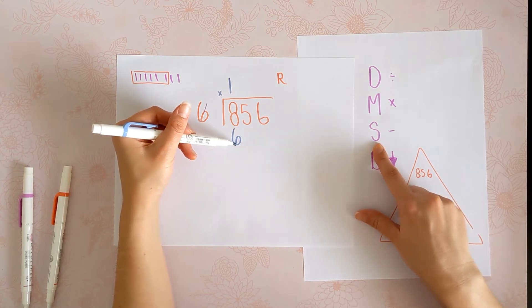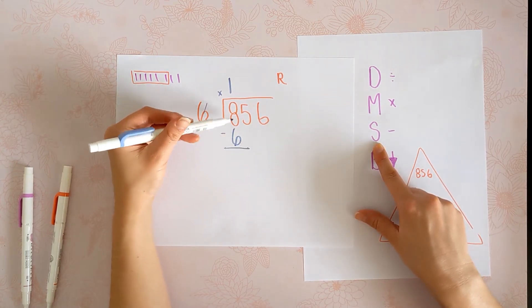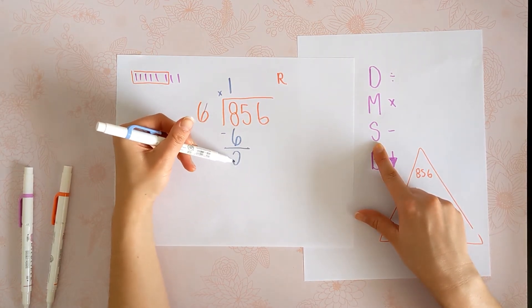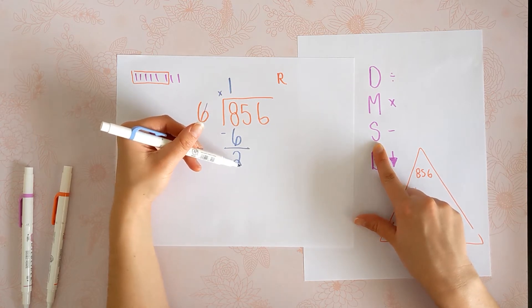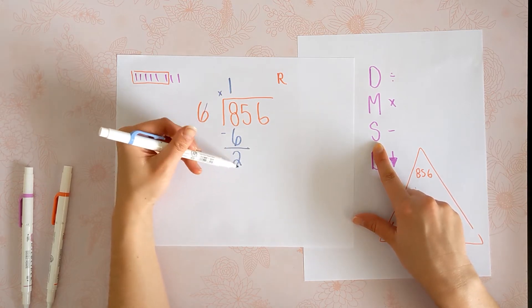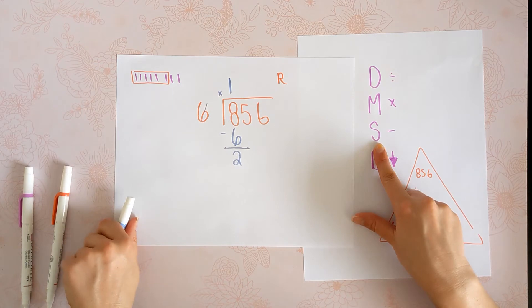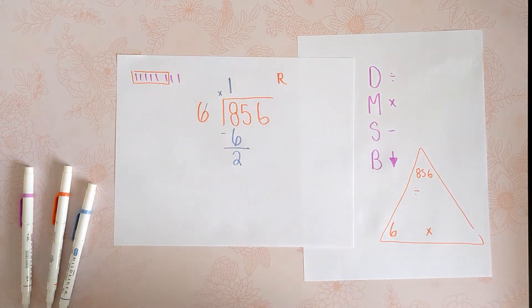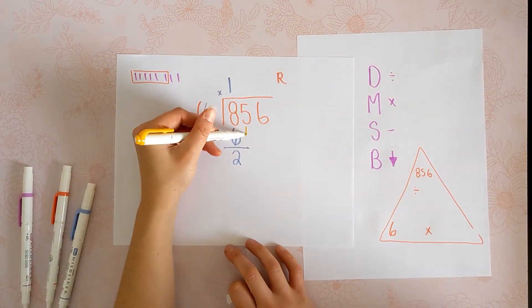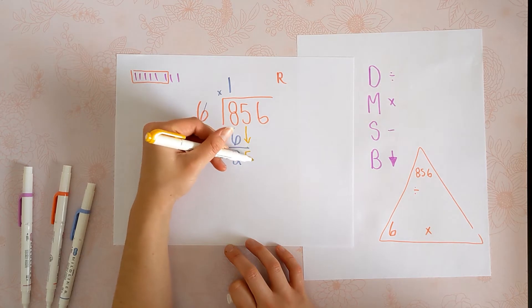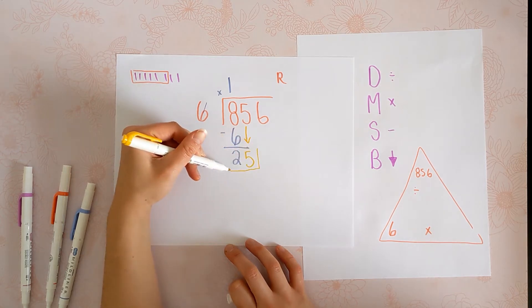Now we're going to subtract using the last thing we touched. 8 minus 6 is 2. Now we're going to bring down to the last place that we were writing. So we were working with the 2 and we're going to take the 5 and bring it down next to the 2. And now we're working with this 25 right here.